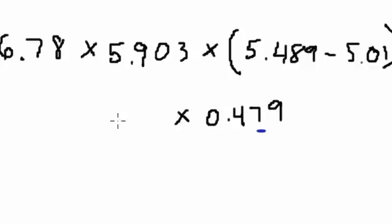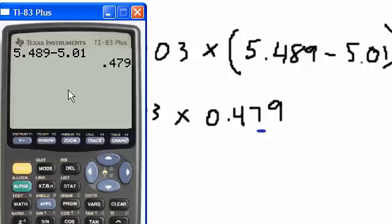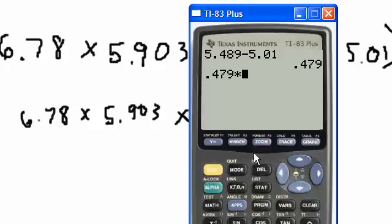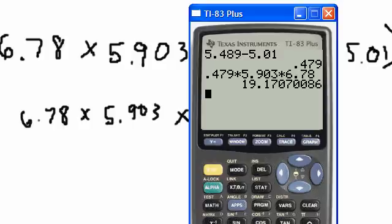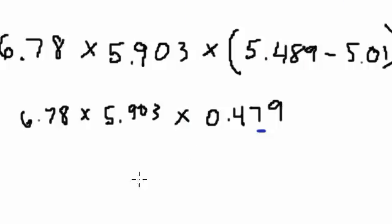So now, this number here is going to be multiplied by 5.903 and multiplied by 6.78. So let's multiply all of this. We have 0.479 times 5.903 times 6.78. And that will give us 19.1707 and so on and so forth.